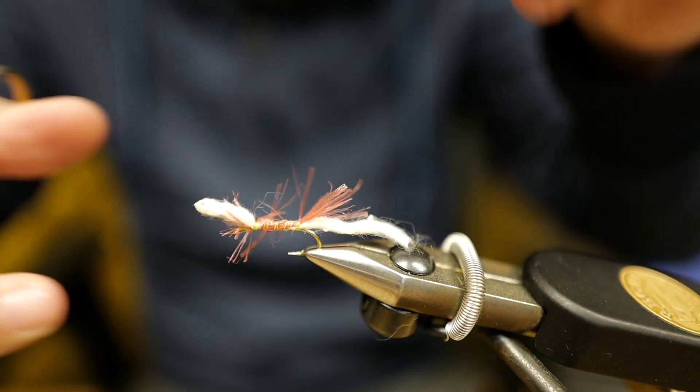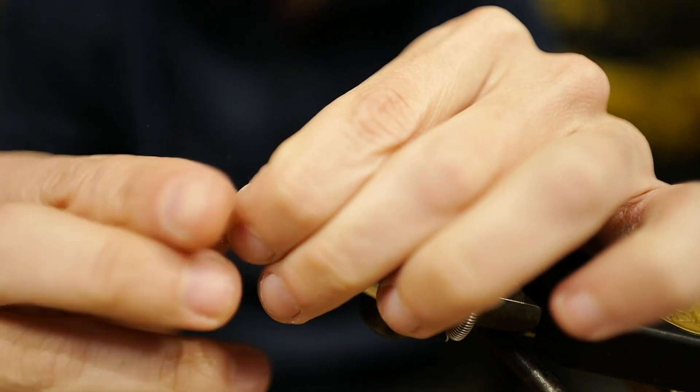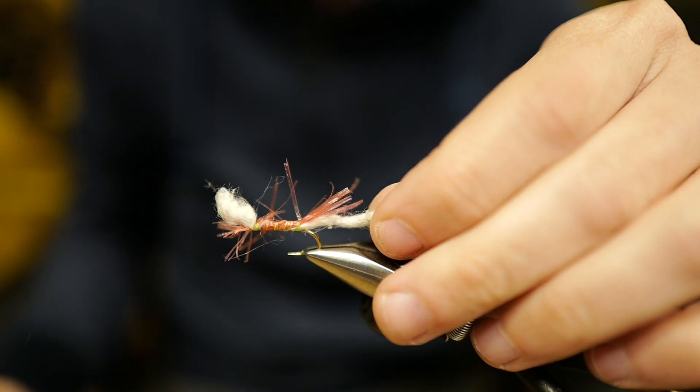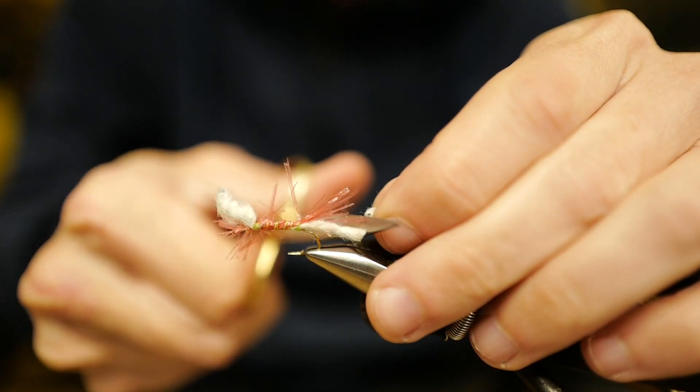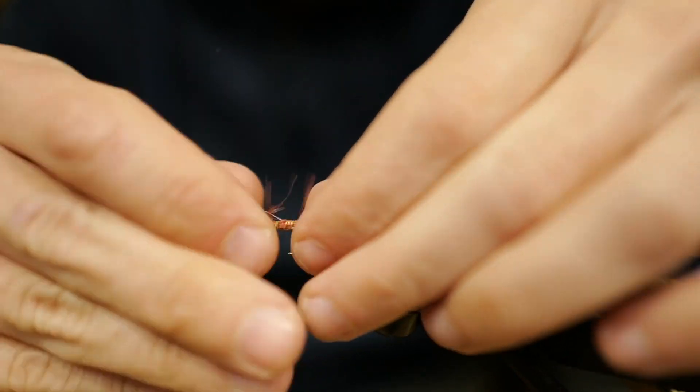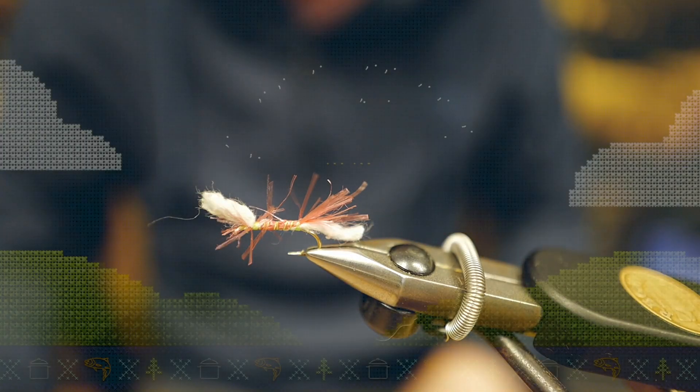So we're going to cut the front a little shorter, and then we are going to kind of open up that material a little bit. And then same in the back. Okay, and there you go—that's like a San Juan worm mop fly mixed together.